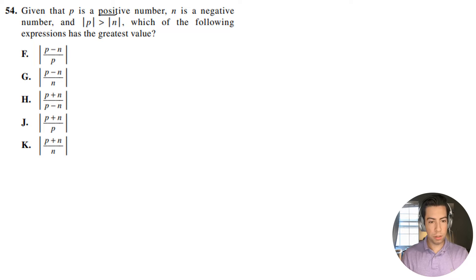So we're given that P is a positive number, N is a negative number, and the absolute value of P is greater than the absolute value of N. Which of the following expressions has the greatest value?